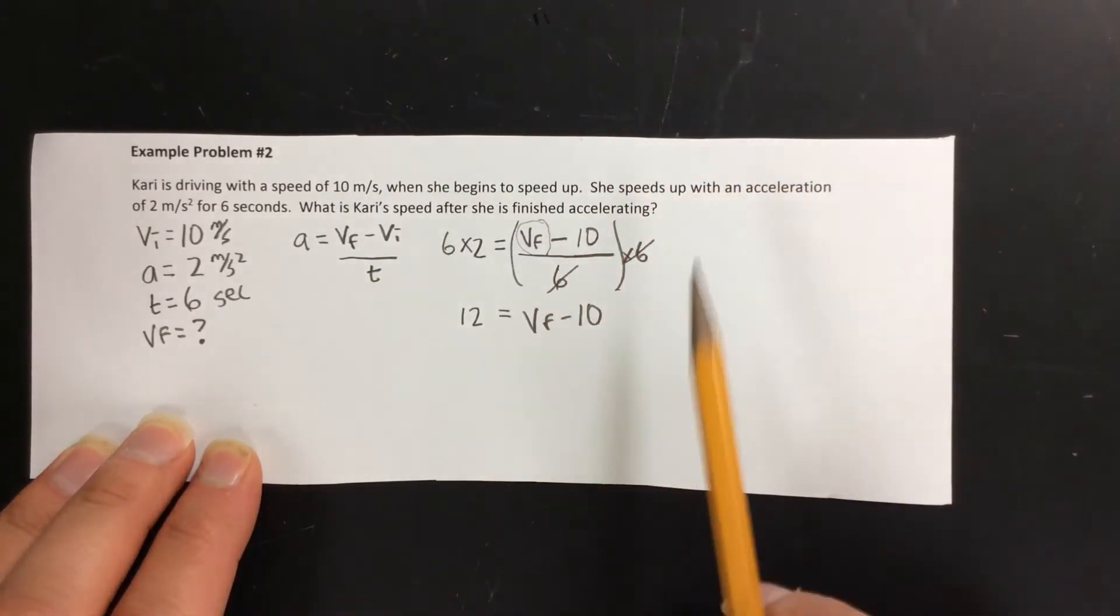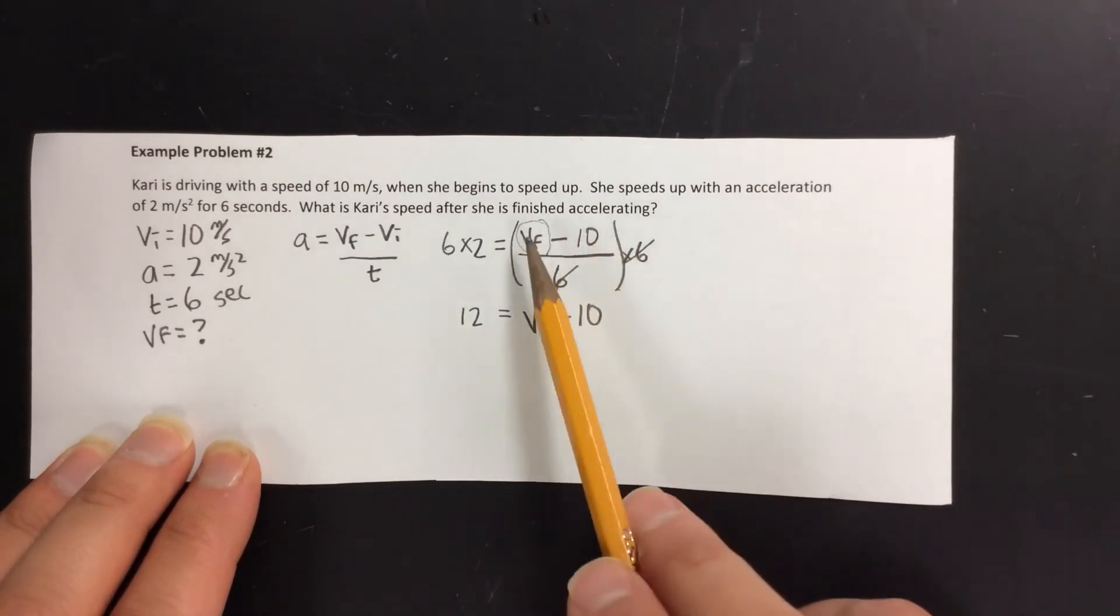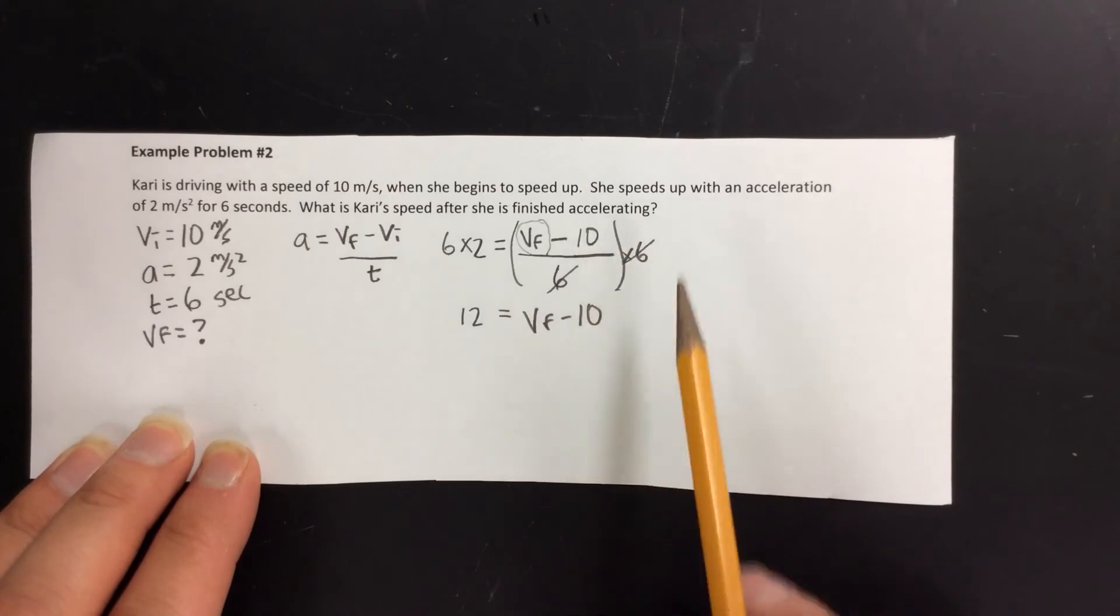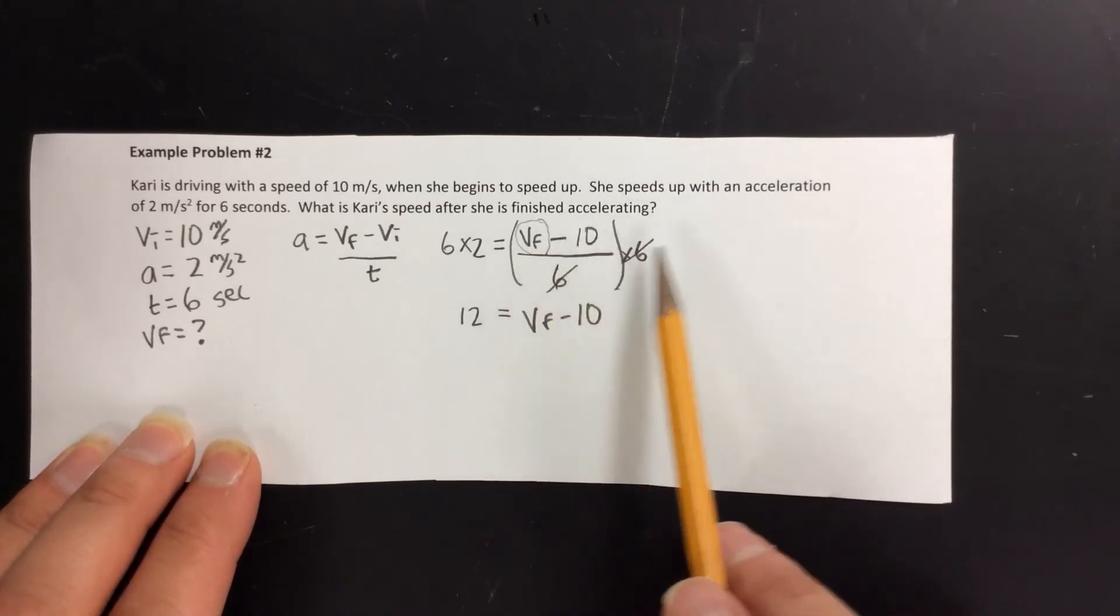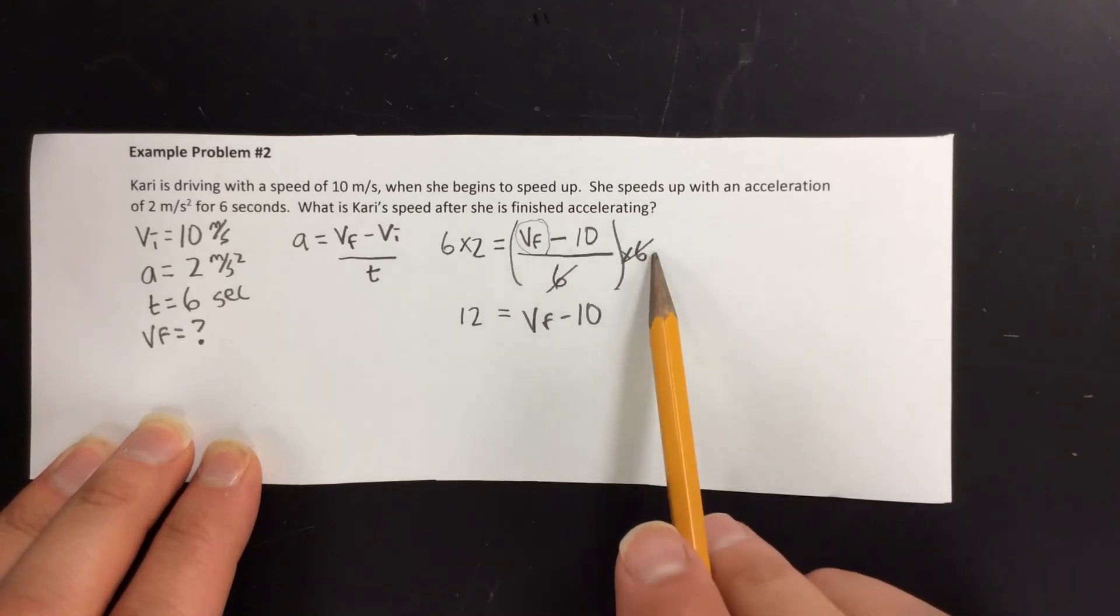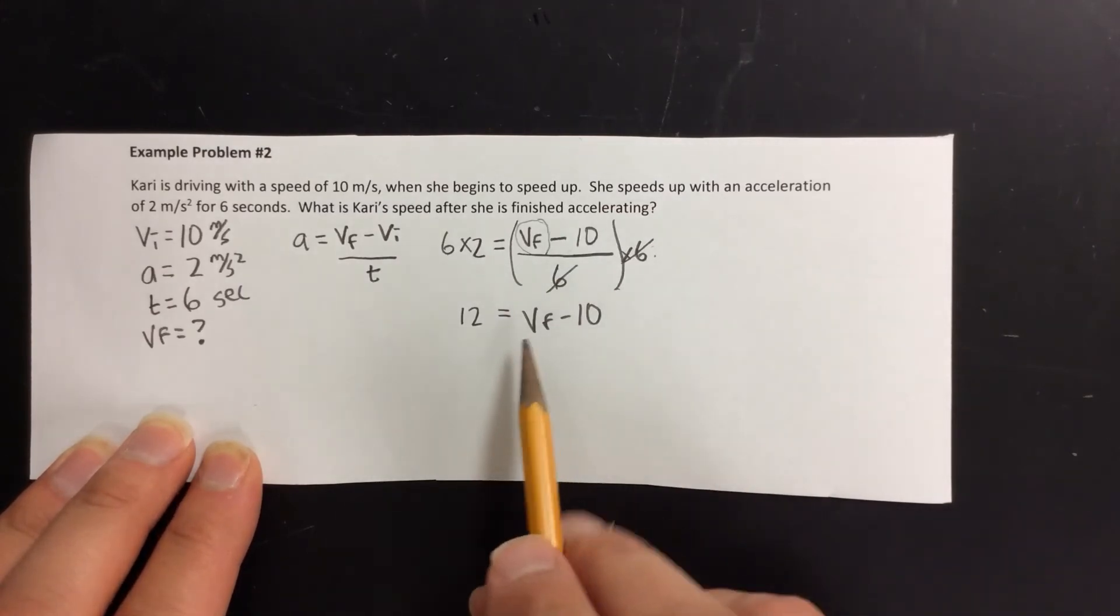Now you got to be very careful when you multiply by 6 that only gets rid of the fraction. It doesn't change what was on top at all. Sometimes students will do that times 6 and they'll put VF minus 60. Nope. When you multiply by 6 here that just gets rid of the fraction. It does not change what's on top.